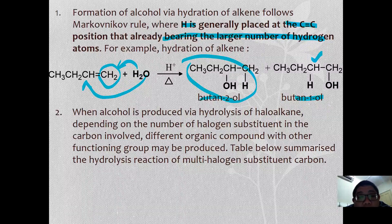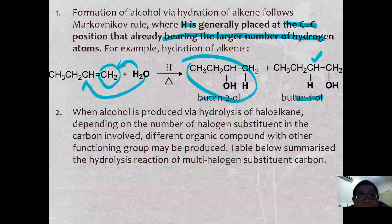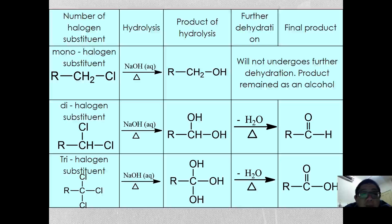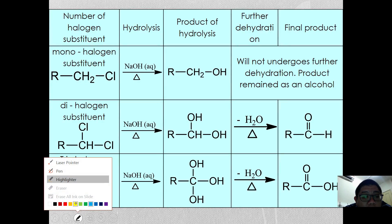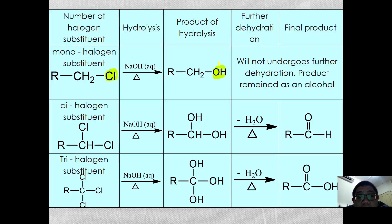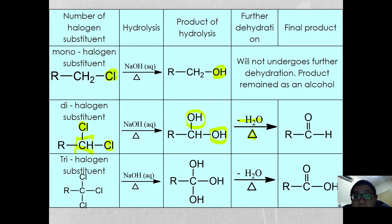Alcohol produced by hydrolysis of haloalkane depends on the number of halogens. For a mono-substituted haloalkane, hydrolysis directly gives an alcohol product. However, if there are two similar chlorine atoms attached to the same carbon, it will first be hydrolyzed to a hydroxyl group, but further dehydration then takes place under heating, leading to formation of a carbonyl compound.